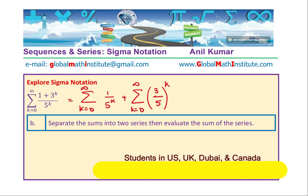So I hope you remember, the sum of geometric series when it is for infinite number of terms, it is equal to A over 1 minus R, if the absolute value of R is less than 1. So in our case, 1 over 5 is less than 1, 3 over 5 is also less than 1.